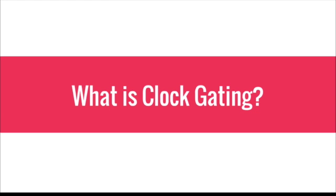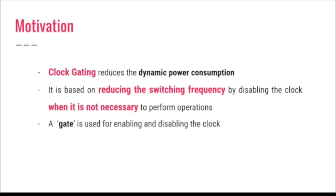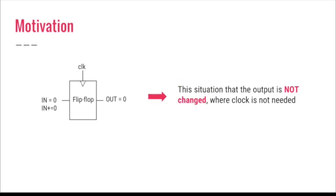What is clock gating? Clock gating is a technique to reduce the dynamic power consumption and it is based on disabling the clock when it is not necessary to use it. This will decrease the switching frequency. For this purpose, a circuit will be used as a gate to control the clock activity. For example, if the input of a flip-flop is the same as in the previous clock cycle, the output is not changing and so maybe the clock is not needed in these cases.